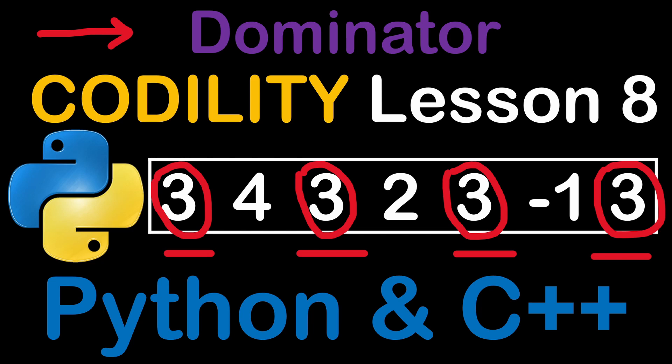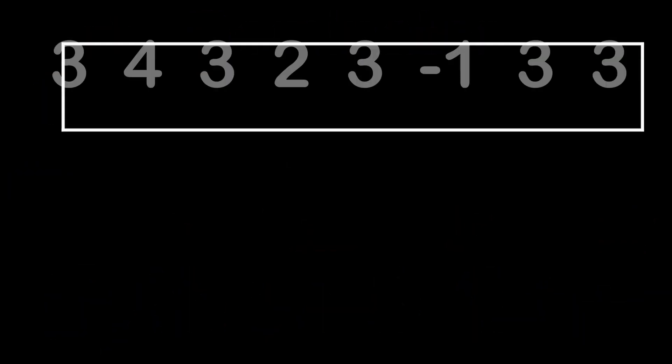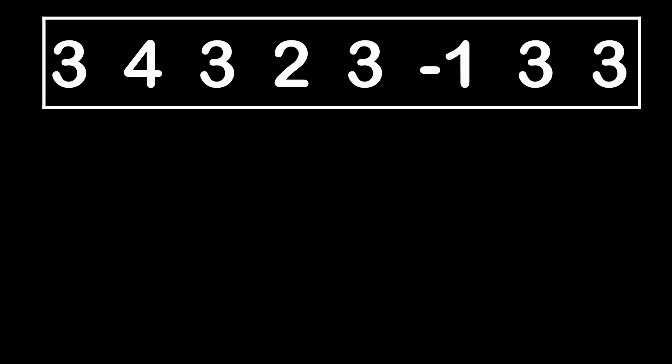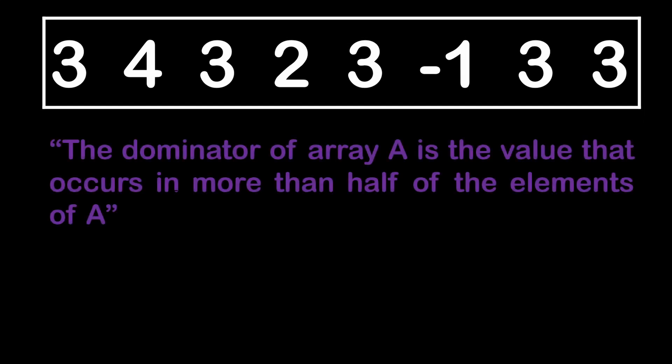We are given an array of numbers and we have to find its so-called dominator element, which would be the value that occurs in more than half of the elements of the array. In this example, it's the number 3 that has 5 occurrences out of 8 elements in total. Since 5 is greater than half of 8, then number 3 is the dominator of this array.